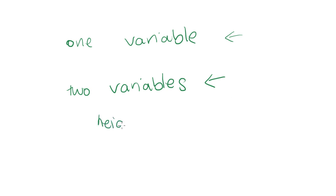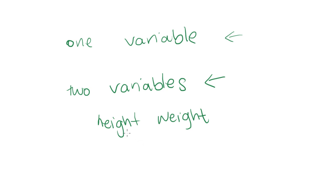For example, height and weight. Those are two different variables we could collect about a group of individuals, and what we might be able to say is that one has some effect on the other. Would it make sense to say my height is due to my weight, or my weight is due to my height? If I was a little bit taller I might weigh a bit more — that makes sense. If I weighed more I might be taller — that doesn't make sense.